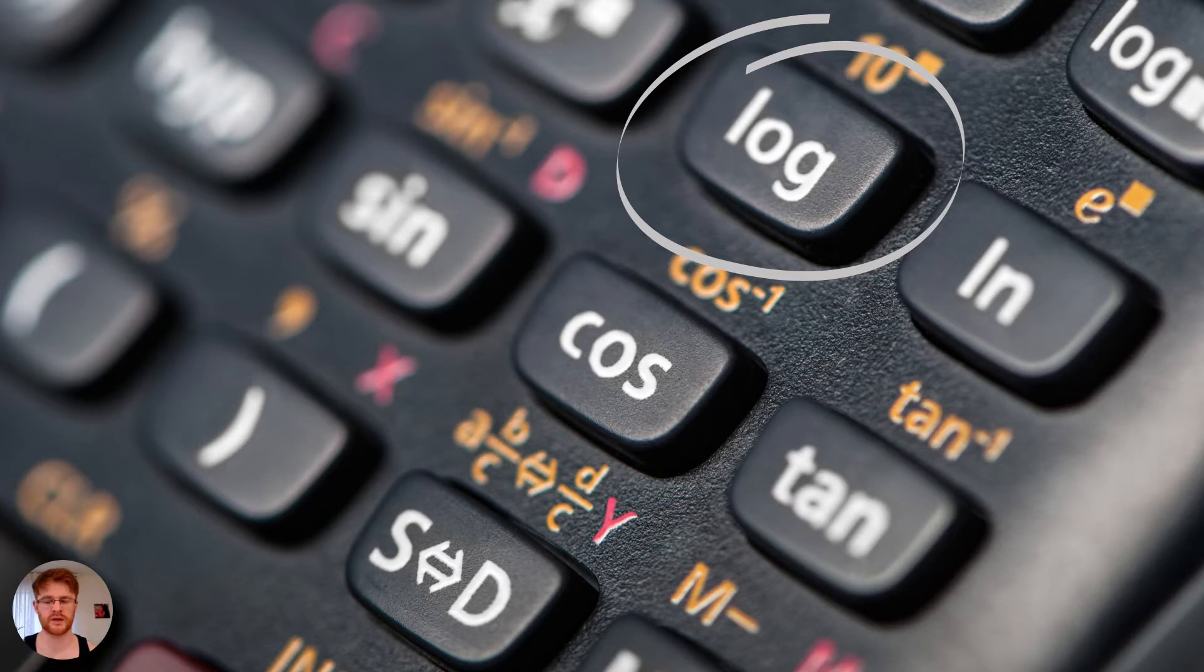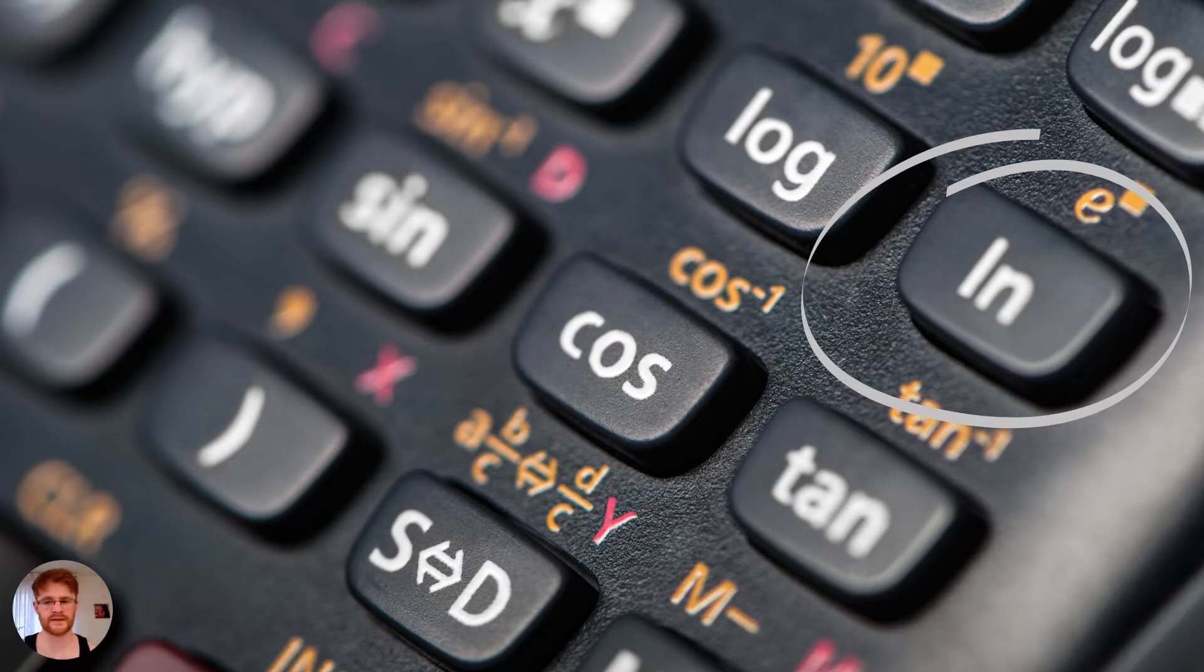In case you didn't already know, it is assumed that the log you see on the button here on most calculators is of base 10, and this log is what we call the natural log, which is written as ln. The natural log is of base e, where e is a fundamental constant in mathematics equal to 2.718, etc., with an infinite number of decimal places. These are considered the most important and most used log bases.